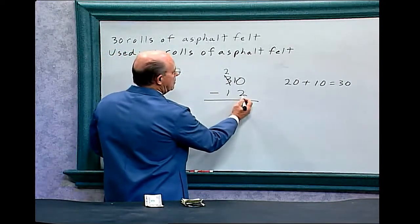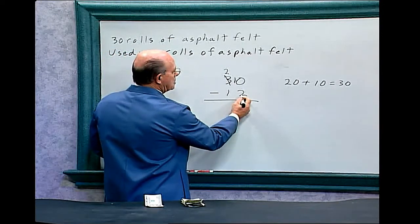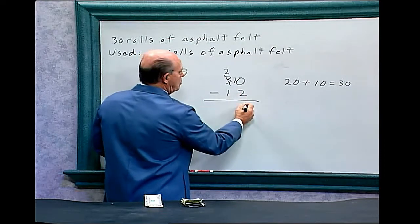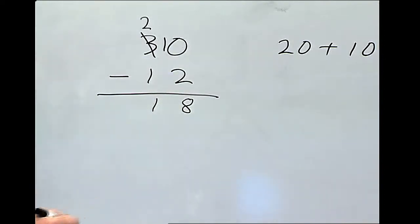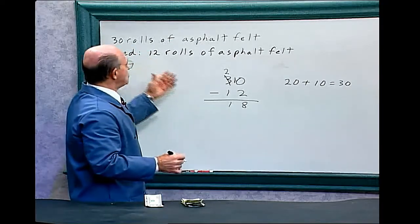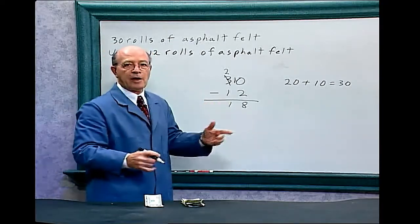So now what we have to do then is deduct from 10, 2, which is 8, and 1 from 2 is 1. So there's 18 rolls of asphalt felt on that pallet.